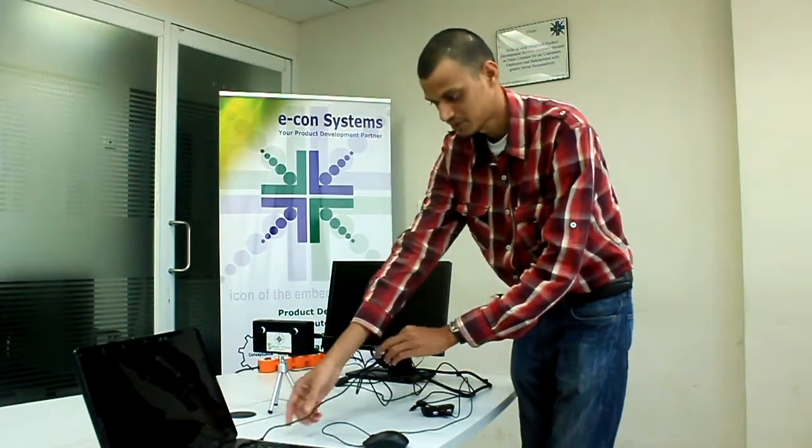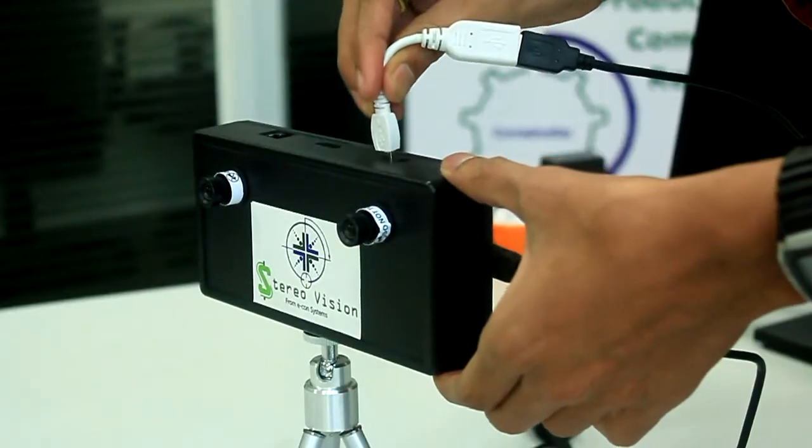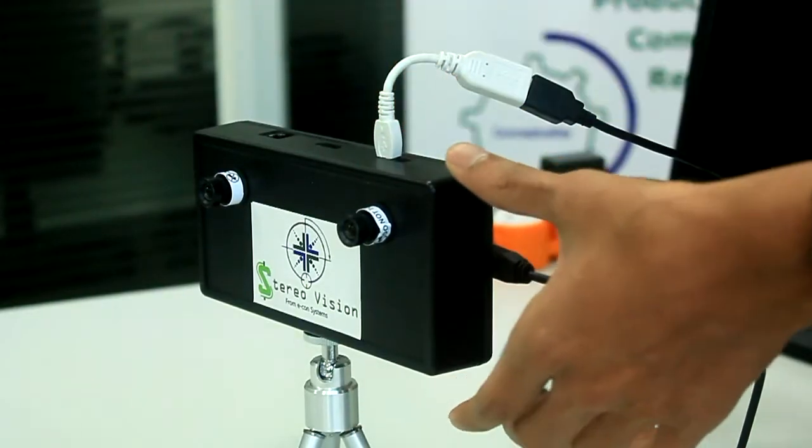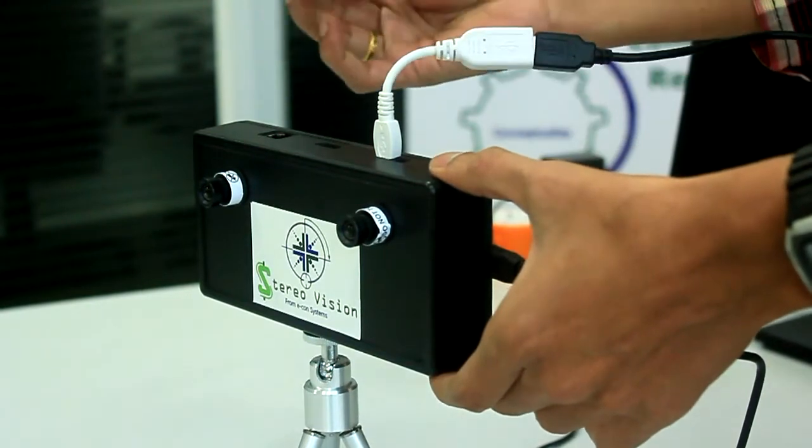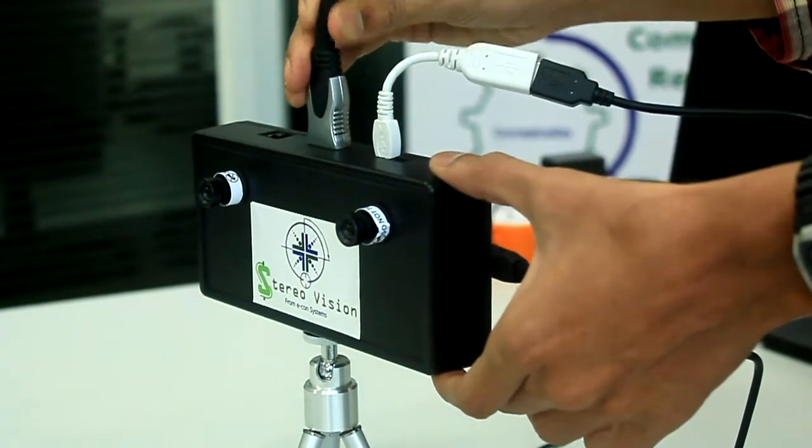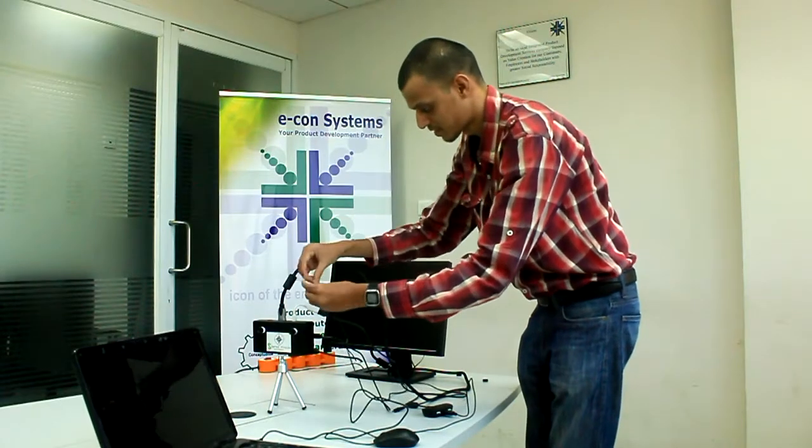The other end of the console cable we will connect to the PC. Next we will connect the USB hub. Now we will connect the USB cable. Finally I am connecting the power adapter.